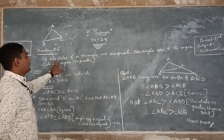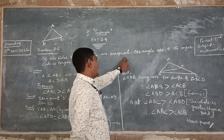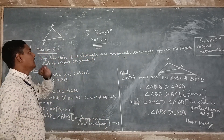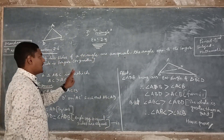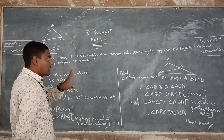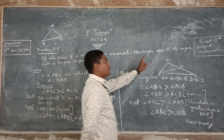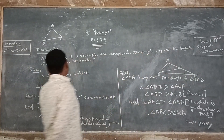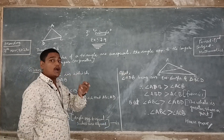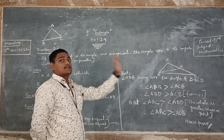The theorem states that two sides of a triangle are unequal. If two sides of a triangle are unequal, the angle opposite to the longer side is larger. So the angle will be bigger on the bigger side.